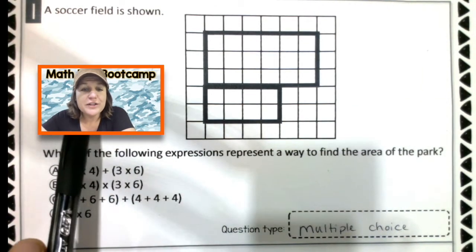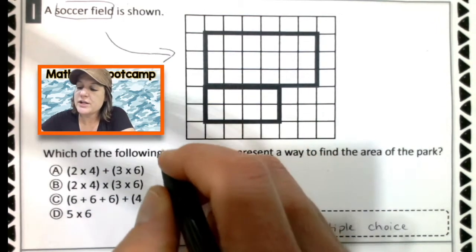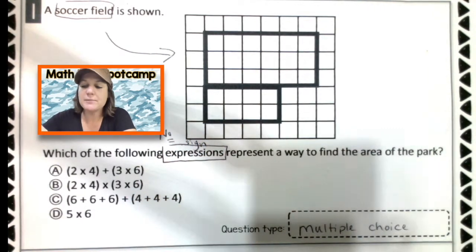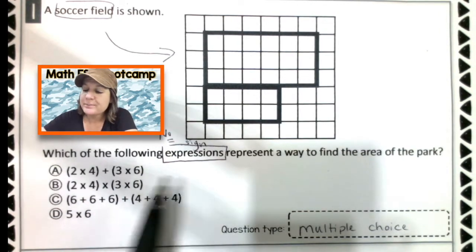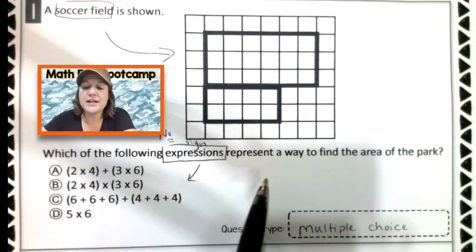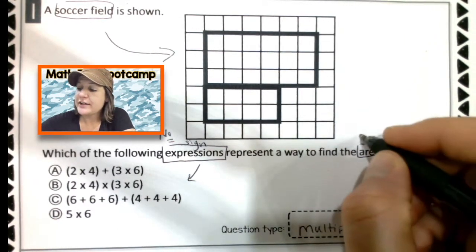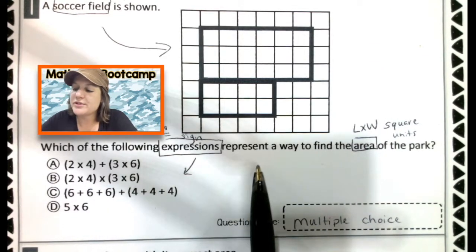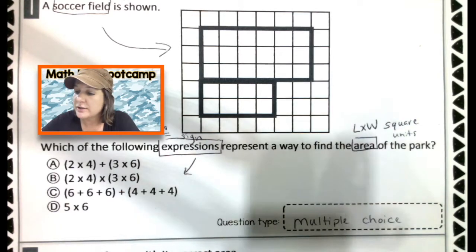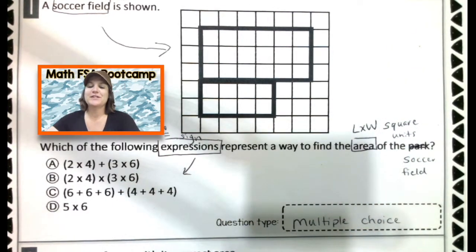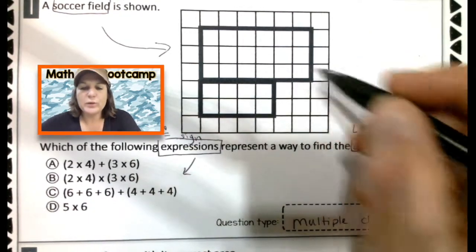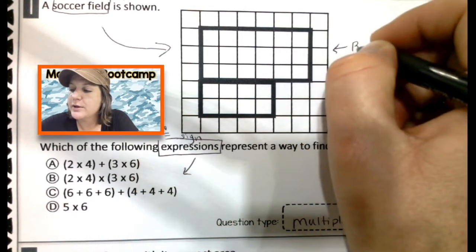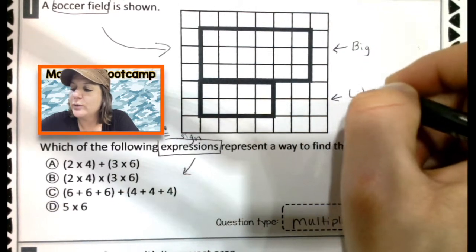All right. So number one says a soccer field is shown. Here's a soccer field. Which of the following expressions? That means that there should be no equal signs. An equation has an equal sign, but expressions do not. Look at that. No equal signs. Which of the following expressions down here represent a way to find the area of the park? When I think of area, I think of length times width. Area involves square units. So which of the following expressions represents a way to find the area of the park? So here's the park. It should say soccer field. I will change that on yours before you see it. Sorry about that. I've got some expressions here, but what I'm seeing up here are two different figures, right? I'm seeing, we'll call this one the big one and this one down here, the little one, the little soccer field. Okay.